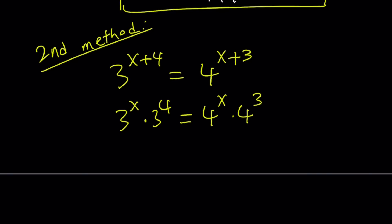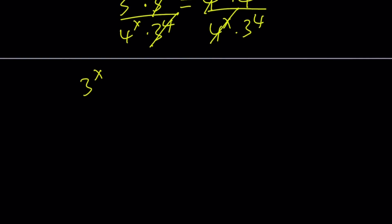We're going to bring the 4 to the power x on the left-hand side, so we're going to divide both sides by that. And then we're also going to be dividing by 3 to the 4th. In other words, we're dividing both sides by 4 to the x times 3 to the 4th. Why? Because this way we can bring the x terms together. These two are going to cancel out and these two are going to cancel out. We end up with 3 to the power x divided by 4 to the power x equals 4 to the power 3 divided by 3 to the power 4. By the way, you can write this as 64 over 81 if you want. Either way is fine.